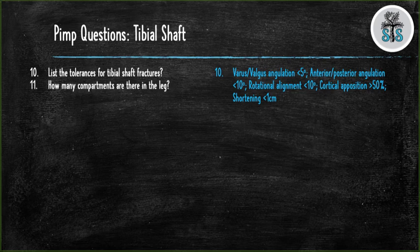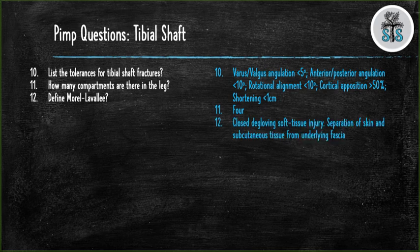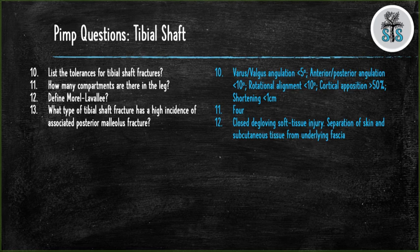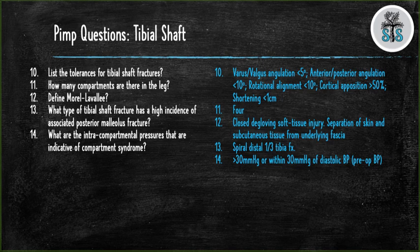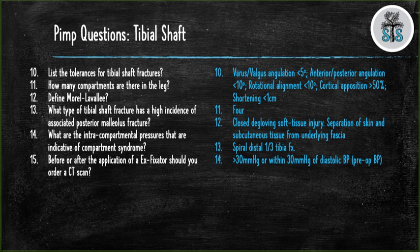Question 11: How many compartments are there in the leg? Four. Question 12: Define Morel-Lavallée lesion — it's a closed degloving soft tissue injury with separation of the skin and subcutaneous tissue from the underlying fascia. Question 13: What type of tibial shaft fracture has the highest incidence of associated posterior malleolus fracture? The spiral distal third tibial fracture. Question 14: What intracompartmental pressures are indicative of compartment syndrome? Greater than 30 mmHg or within 30 mmHg of the diastolic blood pressure. Question 15: Before or after application of an external fixator should you order a CT scan? After.